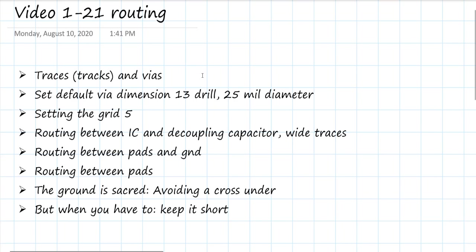We've got the ground on the bottom layer, and so any ground connection we're going to drop a via down to the bottom plane to make a connection. We're also going to look at adjusting the default via dimension so that every time we place a via it comes up to the smallest default size. For most of the routing, we're going to use a grid of five, which will give us the cleanest connection to the location of the pads on the components.